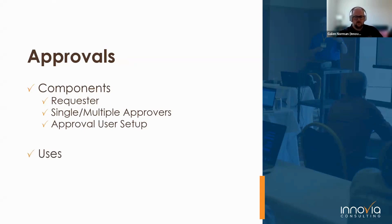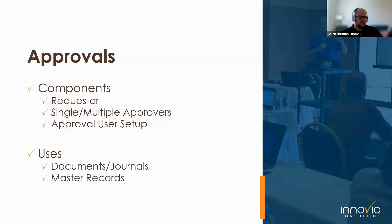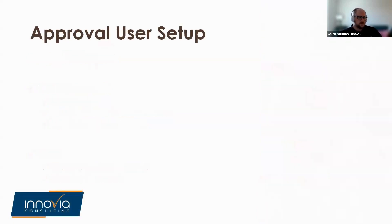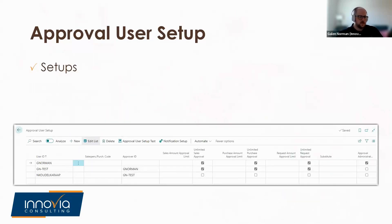The most popular uses for approval workflows in BC are to approve documents such as purchase and sales documents and journals, and master records such as items, customers, and vendors. If an approval workflow is set up for a particular record or document, it cannot be used until it has been approved. For instance, an approval workflow on a customer card prevents posting to that card prior to approval, and an approval workflow on a document prevents the document from being released until it is approved. Both native Business Central approval workflows and those offered by Power Automate rely on the approval user setup, which creates a hierarchy in which approvals can be handled.